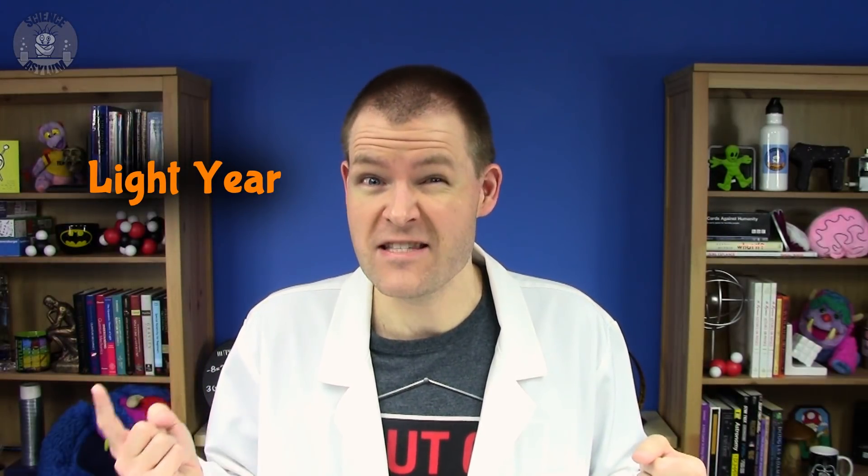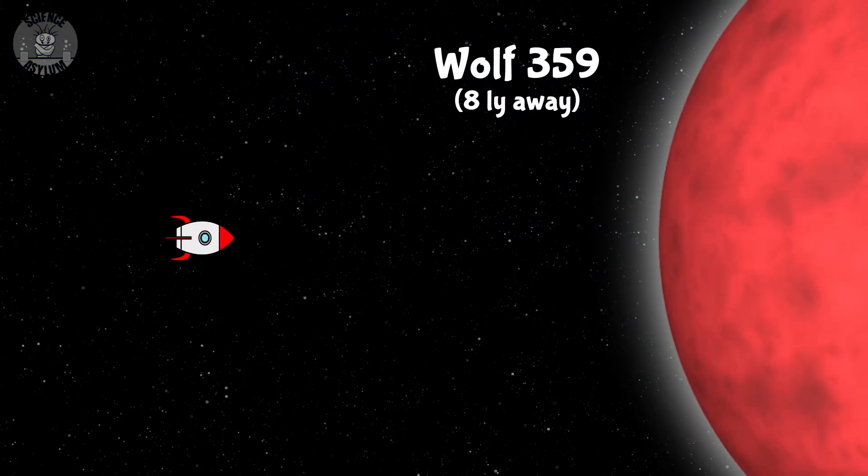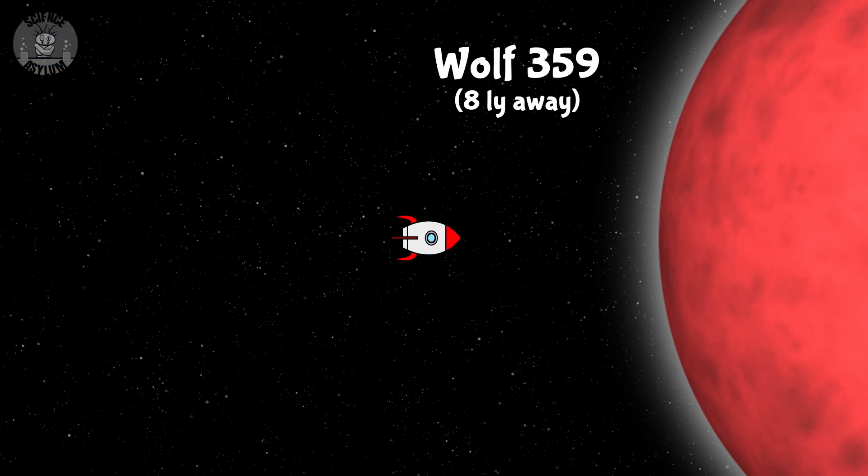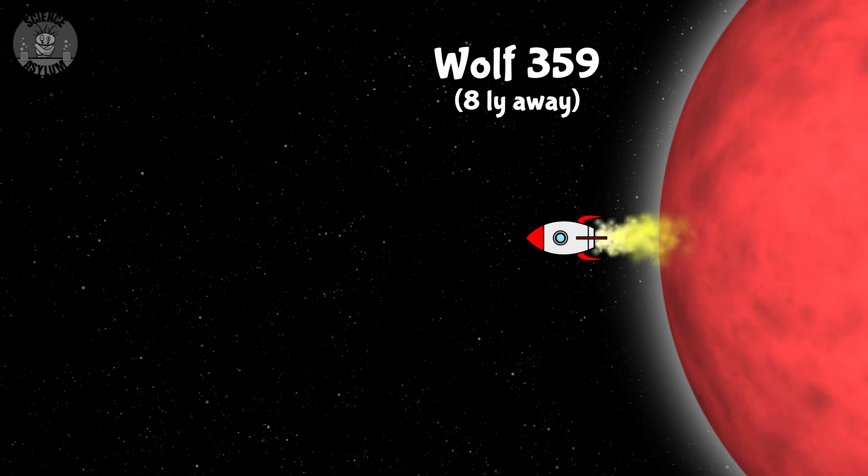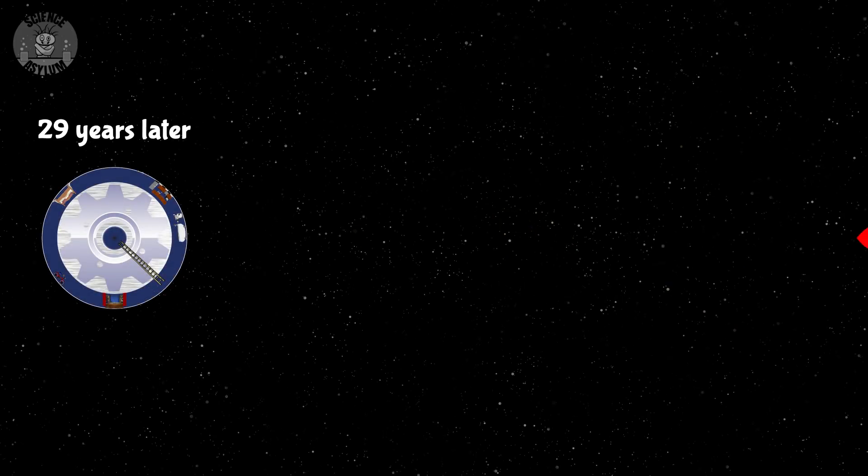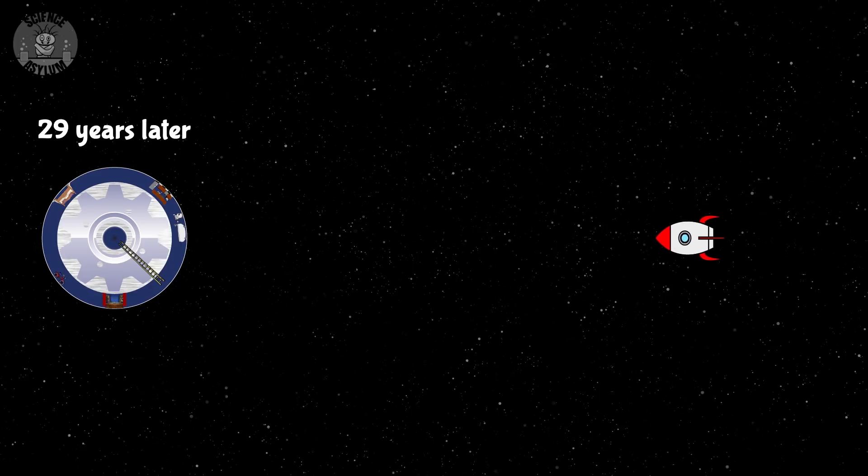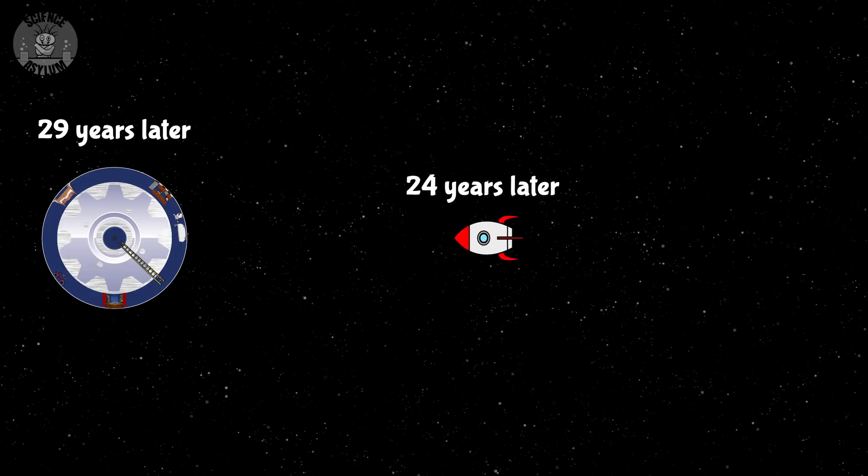By the way, for those of you who don't know, a light year is not a time. It's a speed times a time. A light year is a distance. Anyway, Rocket Clone gets to Wolf 359 and immediately turns around. When he finally gets back to the station, 29 years have gone by for me, but only 24 years have gone by for him.